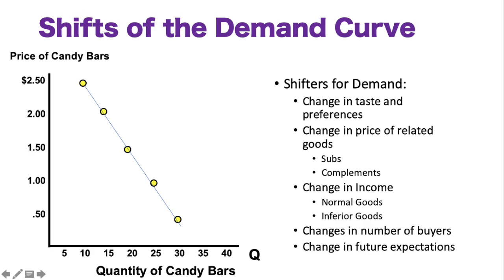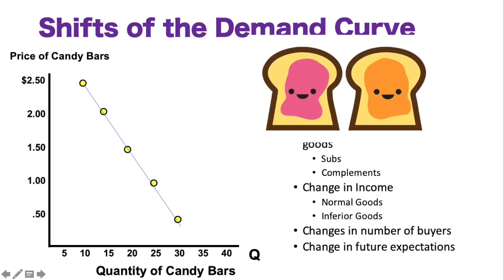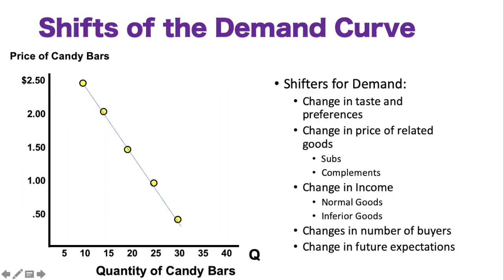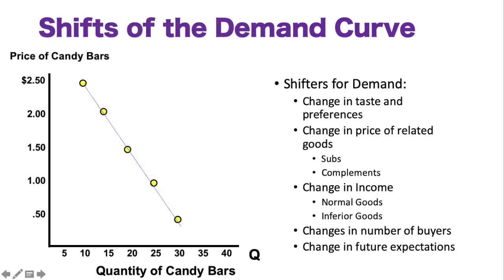Complements are things that go together — for example, peanut butter and jelly, or hot dogs and hot dog buns. Returning to substitutes: if the price of a substitute goes down, the demand for your product goes down as well. So if the price of Pepsi goes down, the demand for Coca-Cola will go down. For complements like milk and cereal, if the price of milk goes up, the demand for cereal goes down. Complements have an inverse relationship, and substitutes have a direct relationship in terms of demand and price.